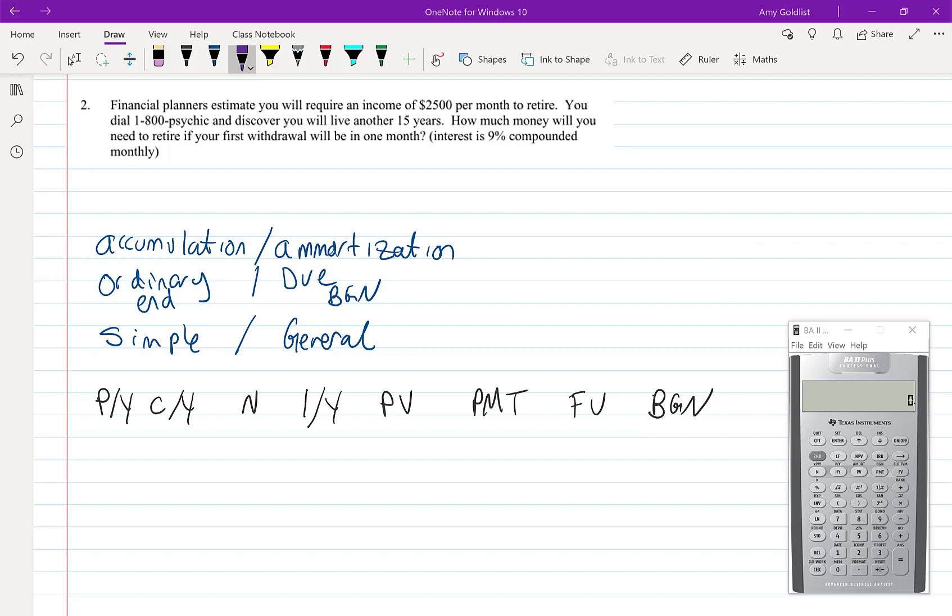Example 2. Financial planners estimate you will require an income of $2,500 per month to retire. You dial a psychic and discover that you're going to live exactly 15 years. How much money will you need to retire if your first withdrawal will be in one month? Interest is going to be 9% compounded monthly.